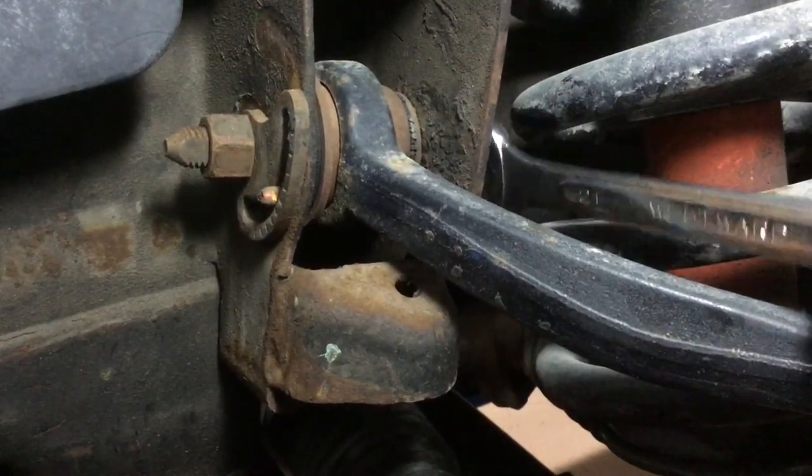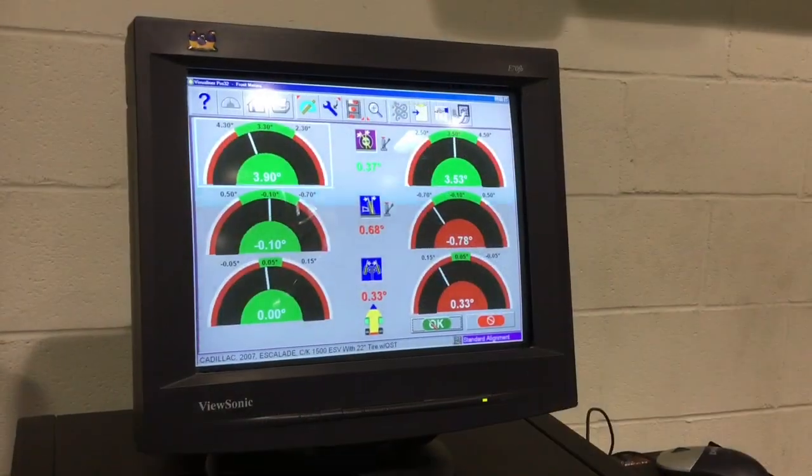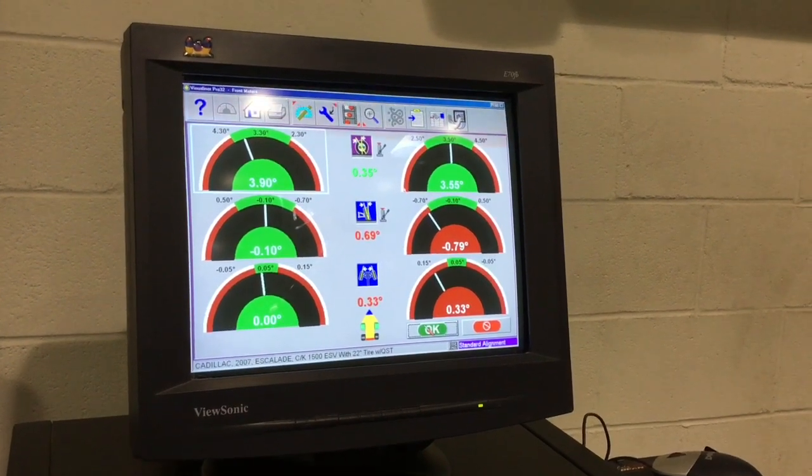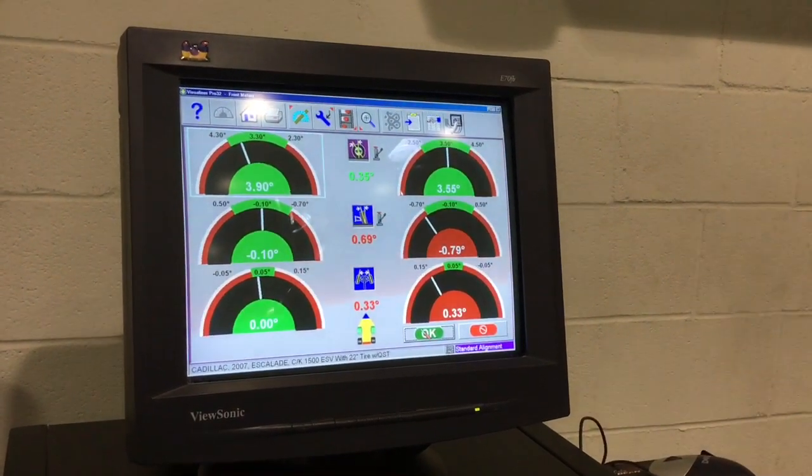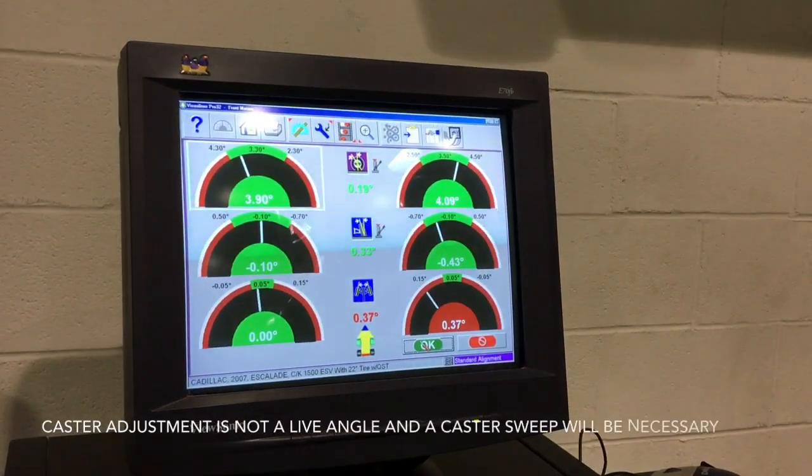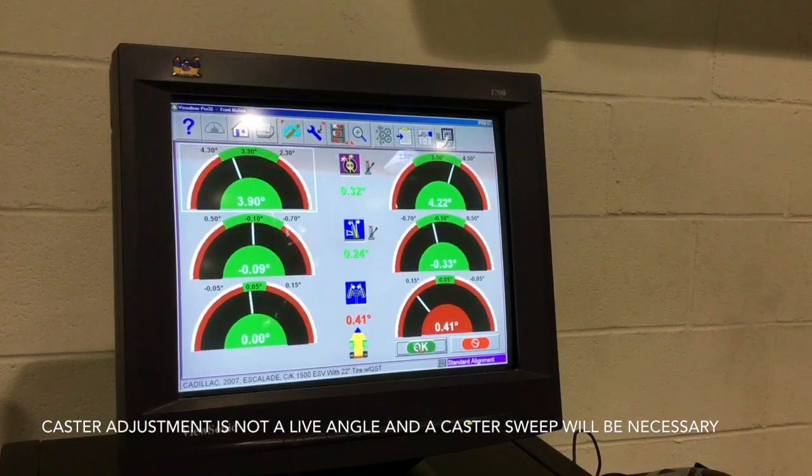This is the computer monitor for the alignment equipment. As Rob is making those adjustments we just saw, if you have a look on the right side you'll see the right front caster and camber changing as we speak. As he's adjusting one, it's adjusting both caster and camber.